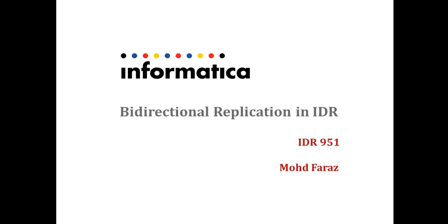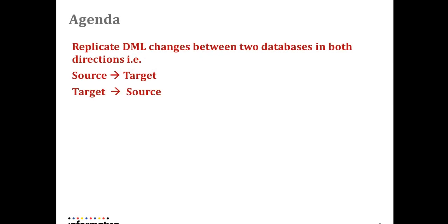Hello everyone, welcome to Informatica Videos. My name is Faraz. Today I'm going to show you how to do bi-directional replication in IDR. IDR replicates DML as well as DDL changes from source to target, but this bi-directional feature replicates only DML changes from source to target and from target to source simultaneously. Today's agenda is to see how this bi-directional replication works in both directions.